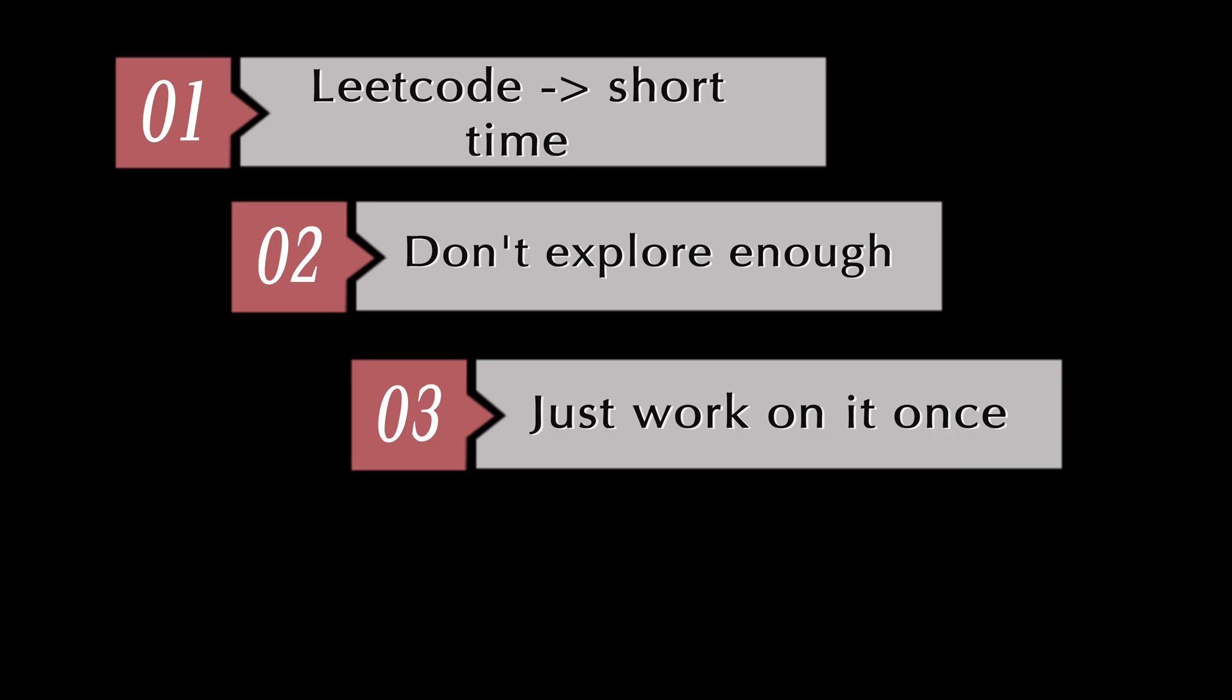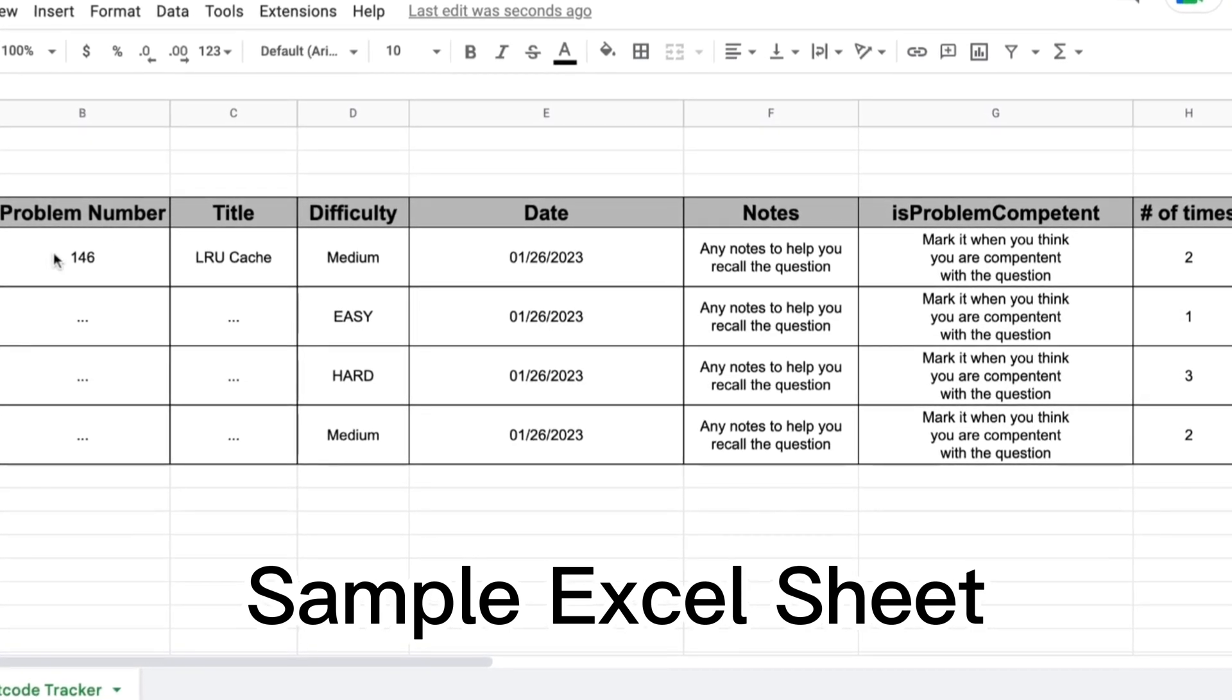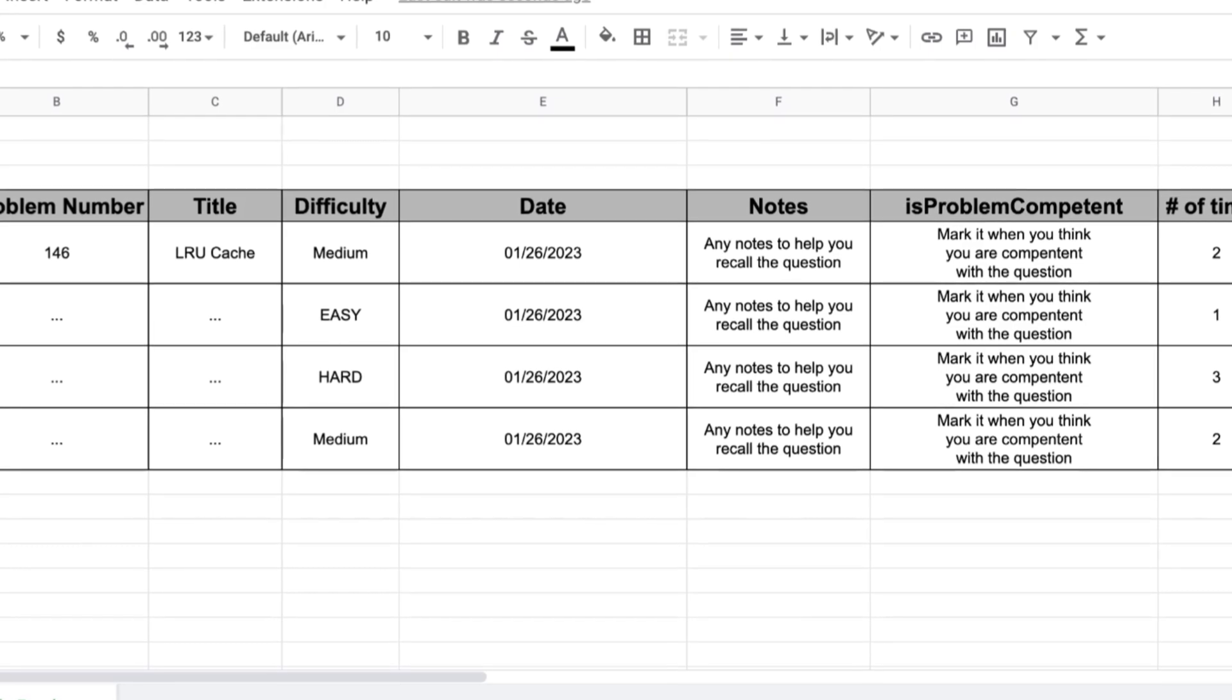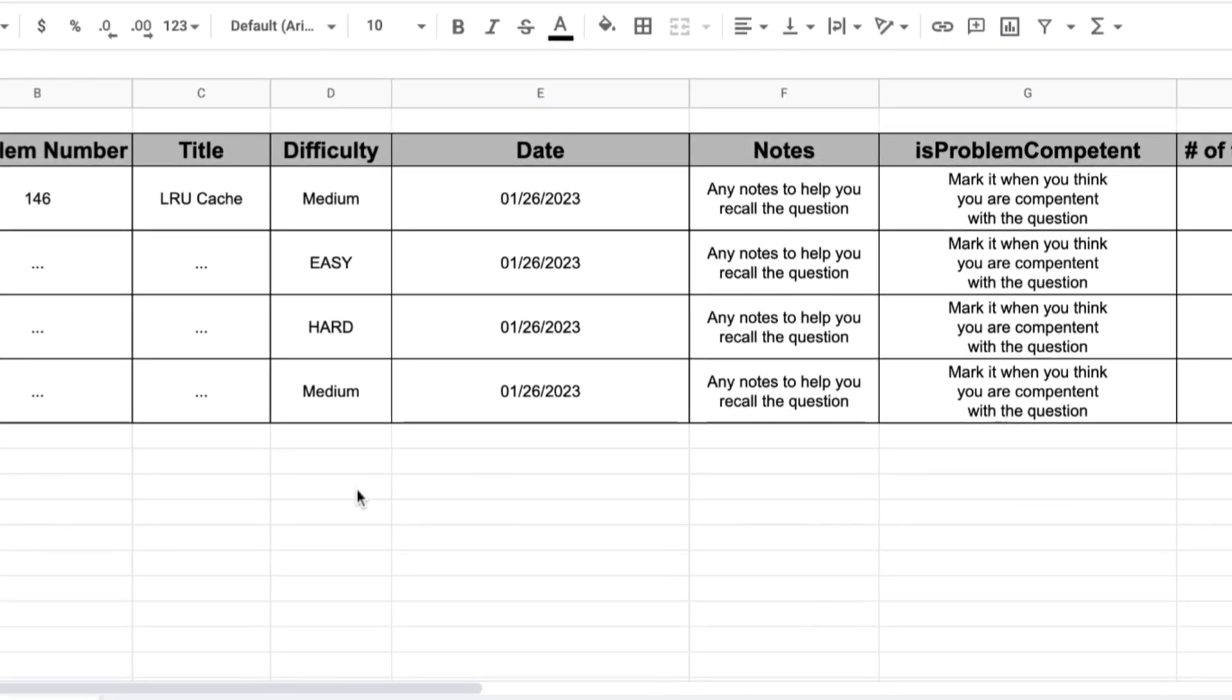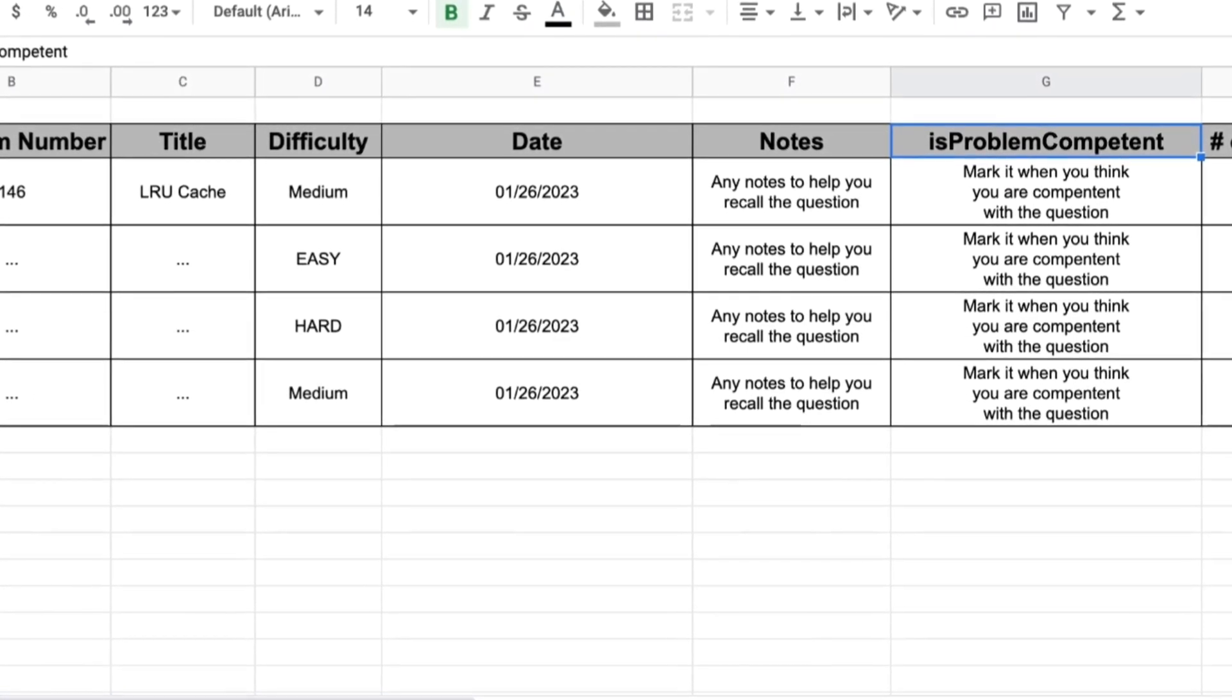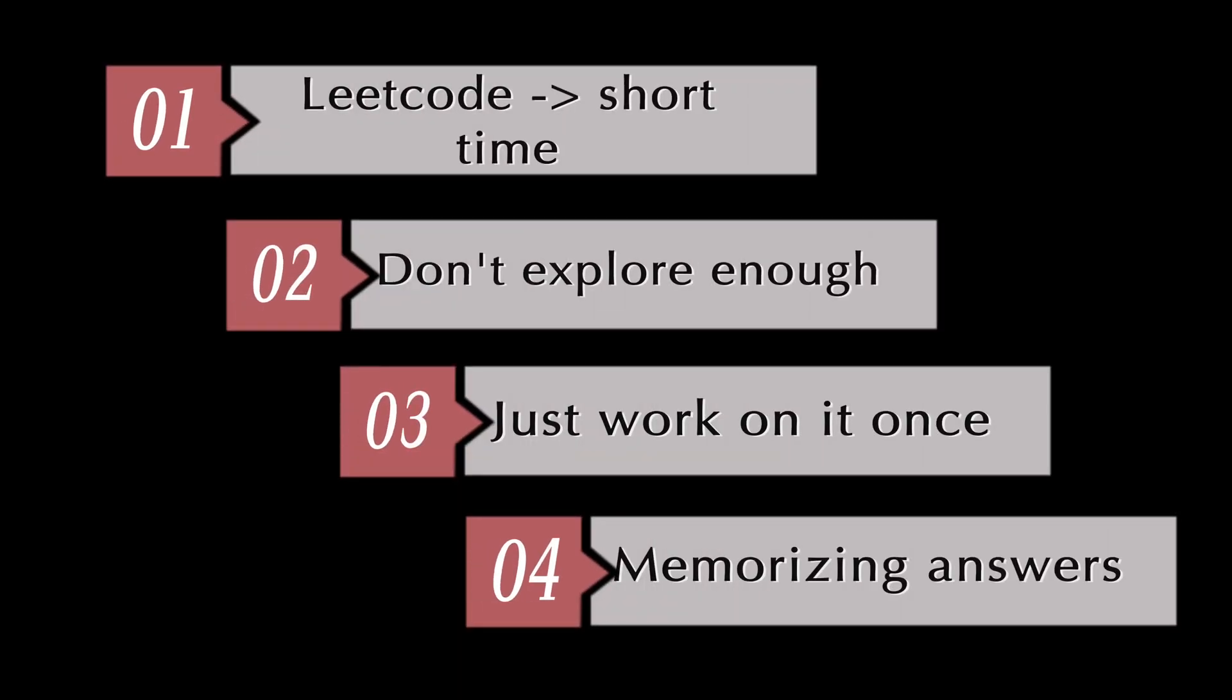Track your progress and revisit them multiple times. Start maintaining a record of questions you do on an Excel sheet. Record things like question link, difficulty level, finish date, things to be noted whether it's an algorithm or simply missing edge cases. Number four mistake is memorizing the answer to solutions. Try to understand the problem instead of hard coding it into your brain. This way when a new problem comes you know which approach to take.